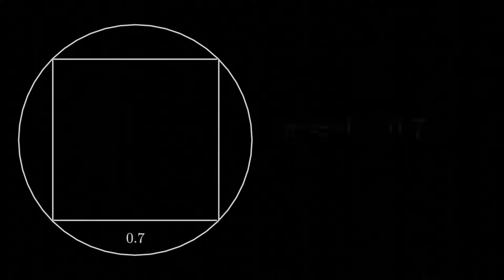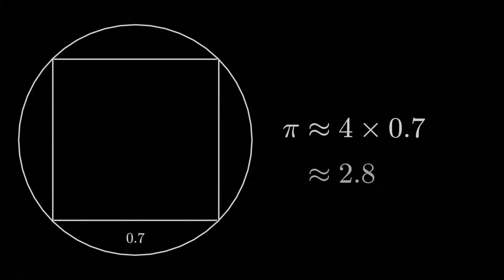If we add another side and approximate the circumference with a square, we get that each side is approximately 0.7, or that pi is 2.8. Still not great, but that is still expected.